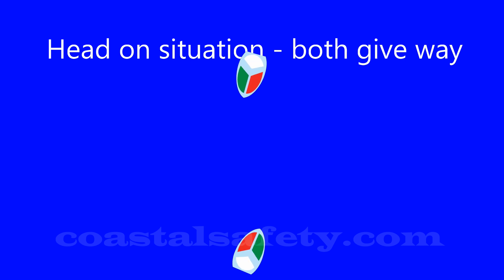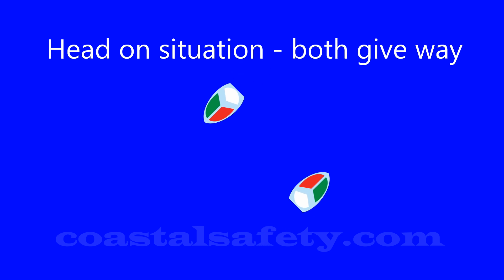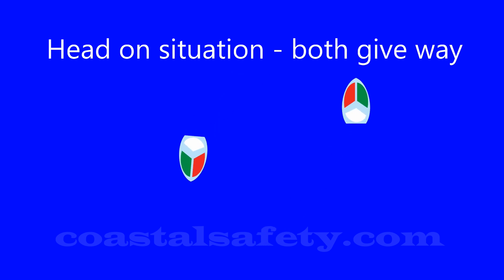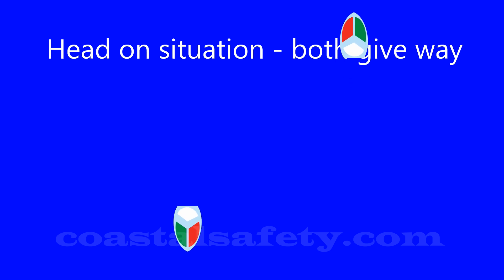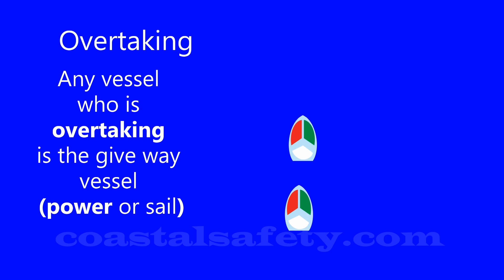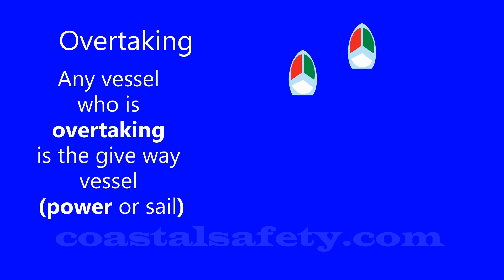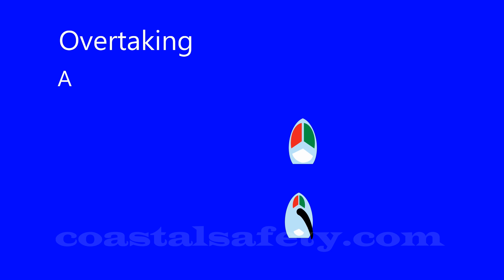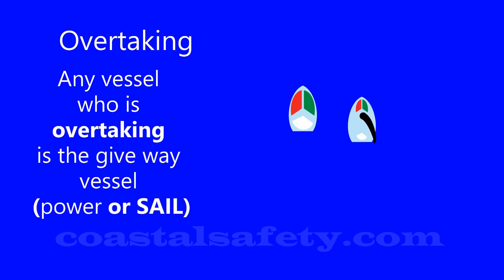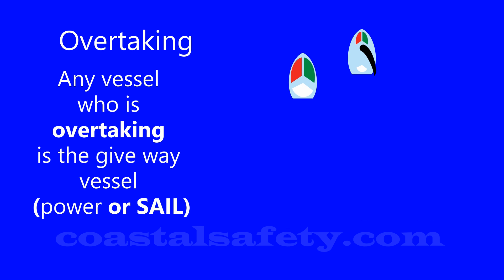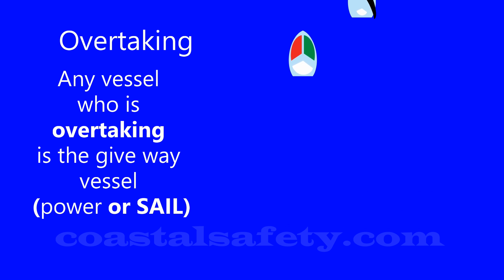In the head-on situation, remember both are give-way vessels — both alter to starboard and once they're past each other they resume their course. For the overtaking situation, it seems straightforward: alter course to starboard and overtake, whether you're a power boat or a sailboat. Remember, sailing boats can sometimes go faster than power boats, and in an overtaking situation the overtaking vessel is the give-way vessel, whether power or sail.